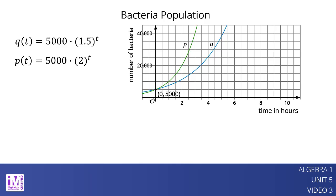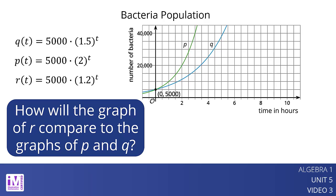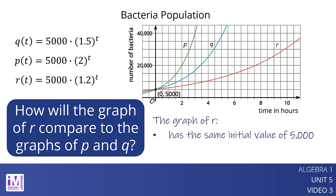This makes sense because the population represented by p is doubling every hour with a growth factor of 2, while the population represented by q is only increasing by a factor of 1.5 each hour. A third bacteria population is represented by the function r given by r of t equals 5,000 times 1.2 to the t. The graph of r has the same initial value of 5,000 and it grows more slowly than p or q.